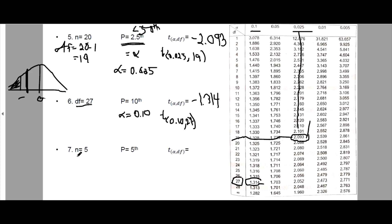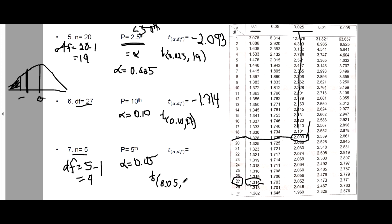Last problem: we are given sample size N equals 5, so we compute degrees of freedom: 5 minus 1 equals 4. Our percentile is the 5th, which is less than the 50th percentile, so this is automatically our alpha — 5 divided by 100 is 0.05. So we have T sub 0.05 comma 4. Looking up 0.05 with degrees of freedom 4, we get 2.132. Since it is less than 50%, it is on the left side of 0, so this is negative 2.132.